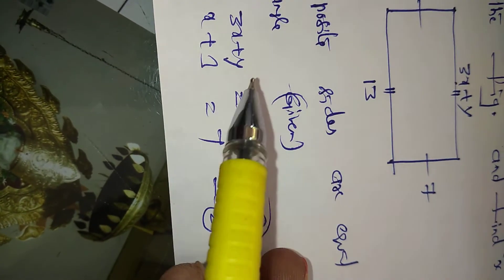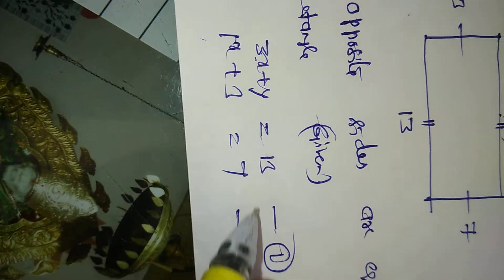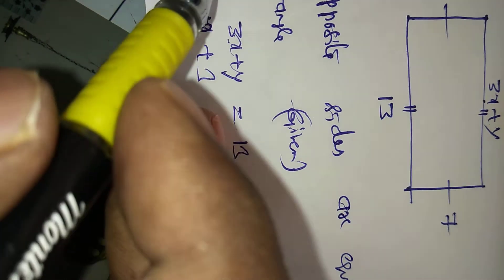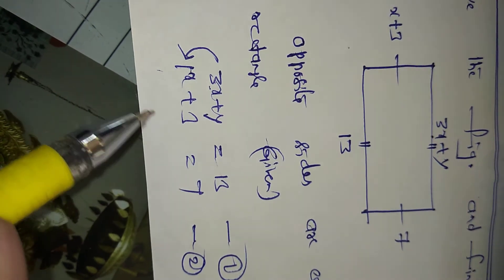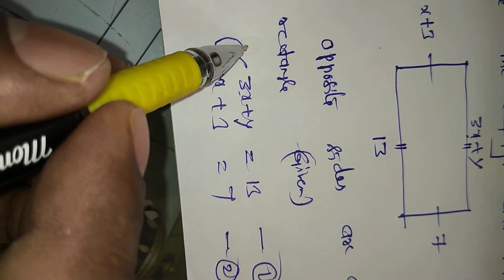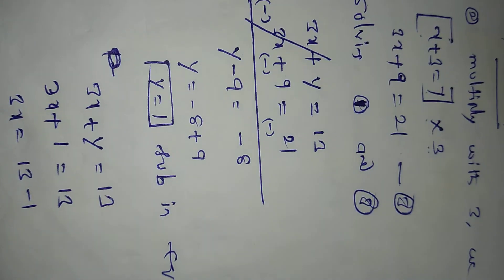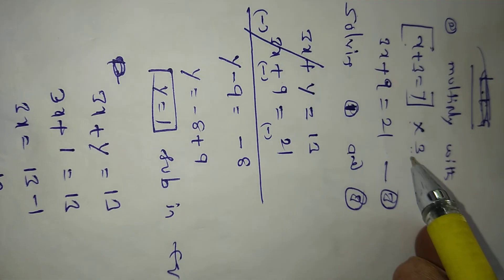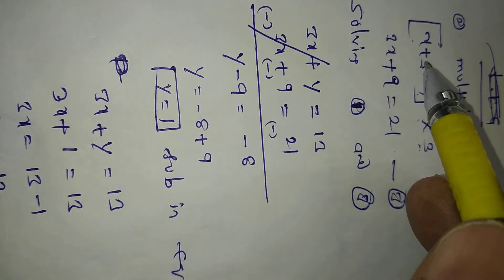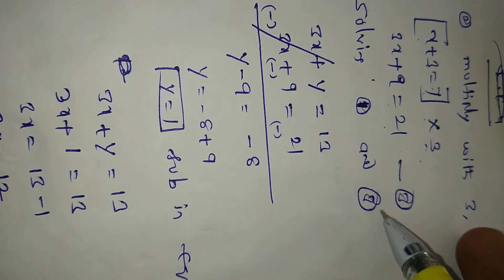Here x 3 times is there, here x 1 times. We can multiply these two equations with these numbers alternate, vice versa. 3 into second equation, 1 into first equation. Equation 2, multiply with 3: we get x plus 3 equals 7 into 3. 3 into x, 3x plus 3 into 3, 3 times 9 equals 3 into 7 times 21. We got equation number 3.